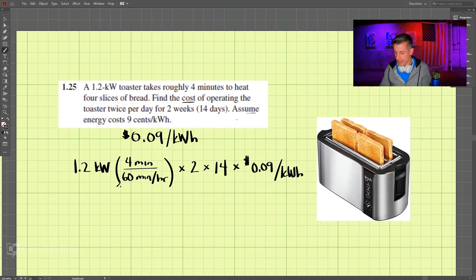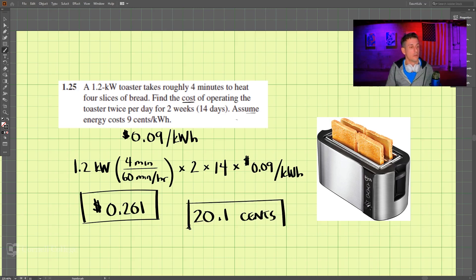Let's do that calculation: 1.2 times 4 divided by 60 times 2 times 14 times 0.09. That comes out to be $0.201, which is about 20 cents, but we could write this as 20.1 cents to run this toaster for two weeks.